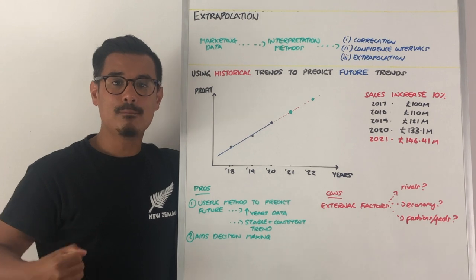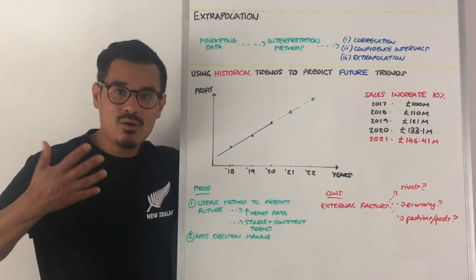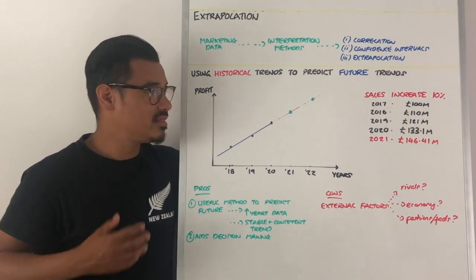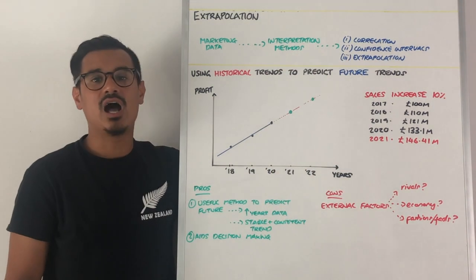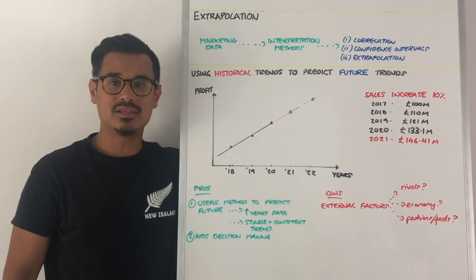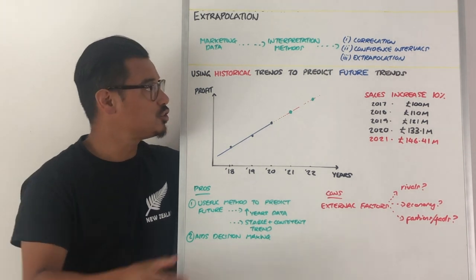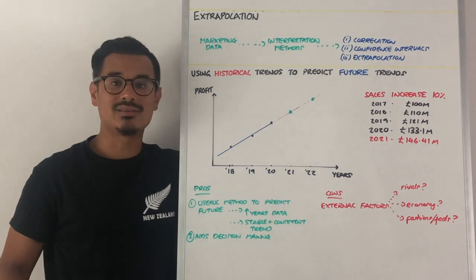Then you might think they will increase by 10% again this year. If they did so, then in 2021, they would be 146.41 million. You just use extrapolation there to predict the future using historical trends.